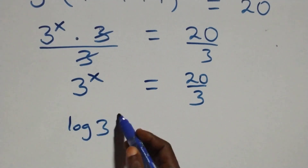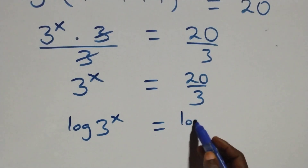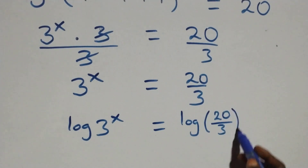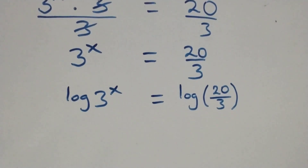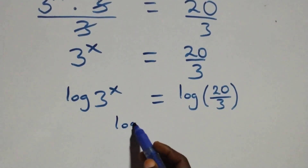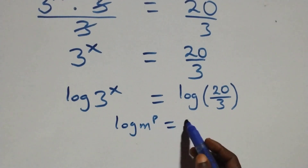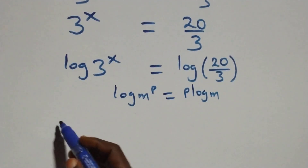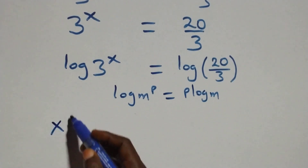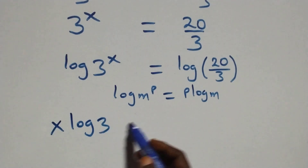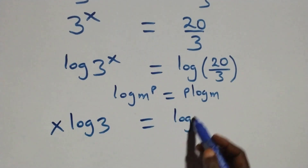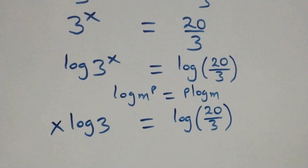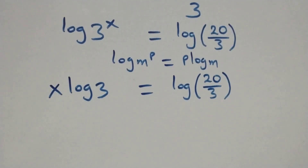The next step: we take the log on both sides. That is, log of 3 raised to power x equals log of 20 over 3. Then we apply the power rule of logarithms: when we have log n raised to power p, this is the same as p log n. So x becomes x log 3 equals log 20 over 3.